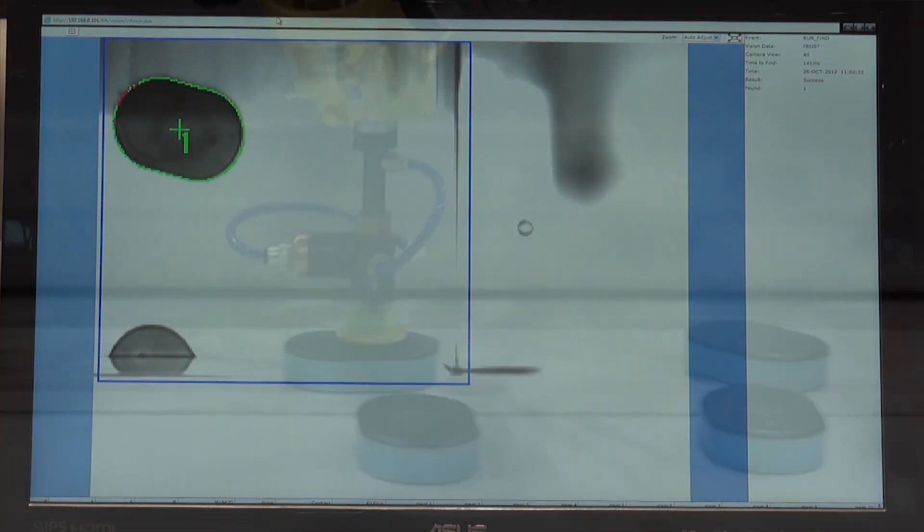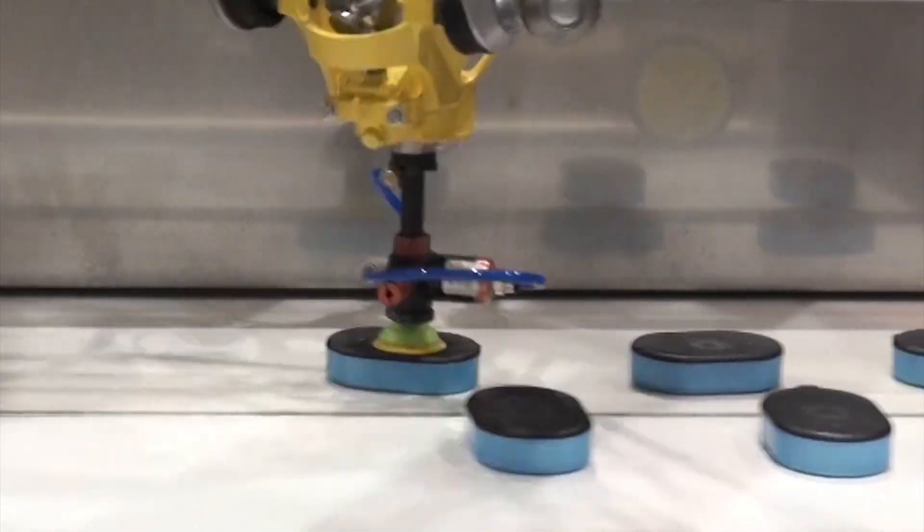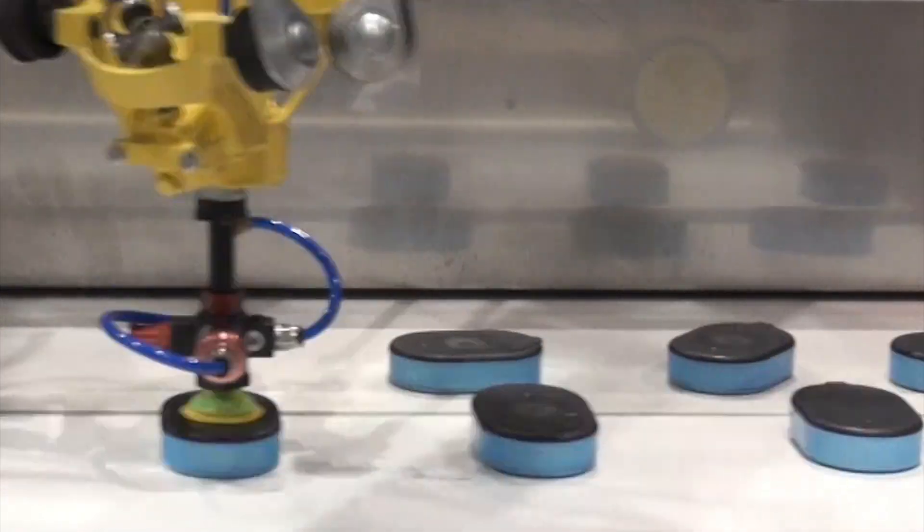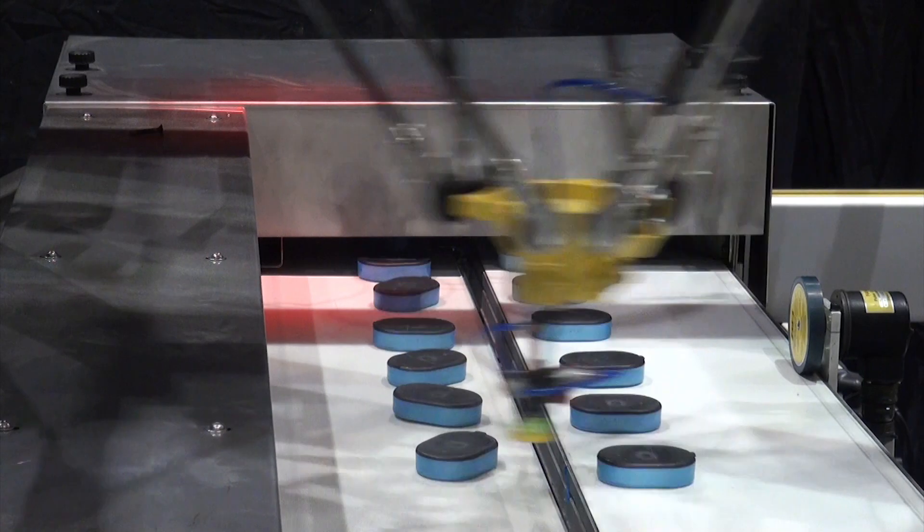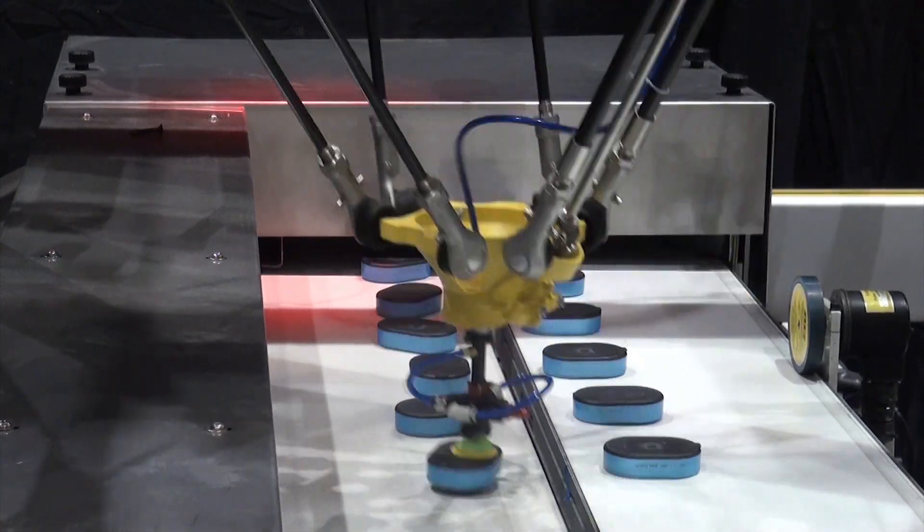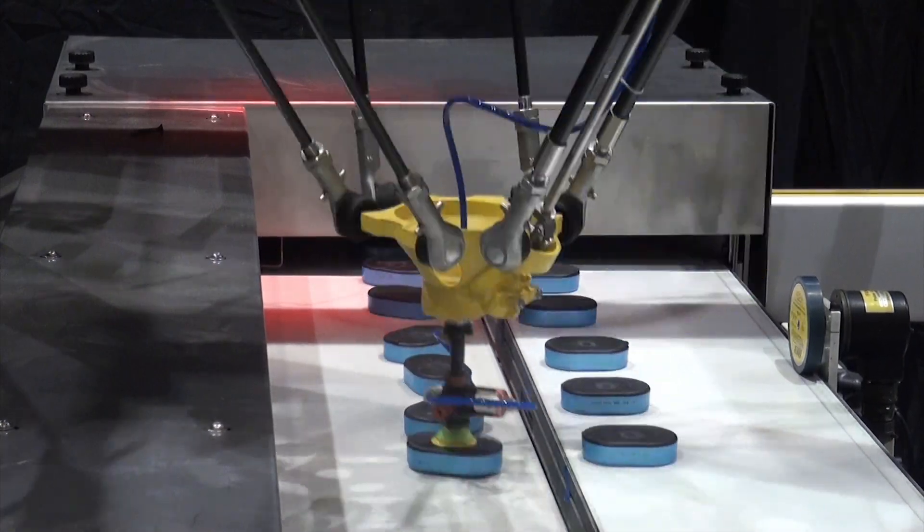The FANUC M2IA robot is ideal for applications requiring high-speed and accurate handling. Its handling capabilities include a wide range of products, including electronics, medical devices, pharmaceuticals, cosmetics, office supplies, and consumer products, among others.